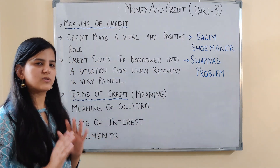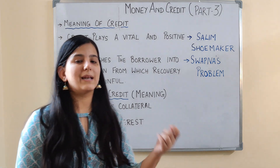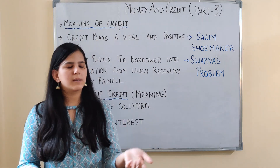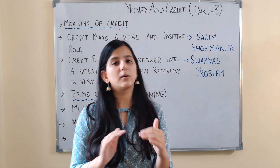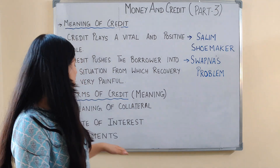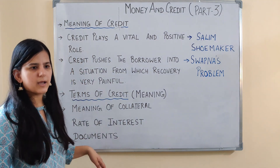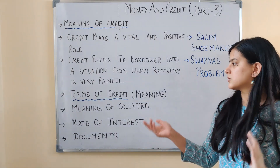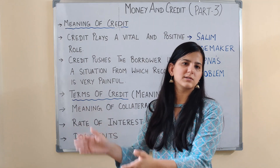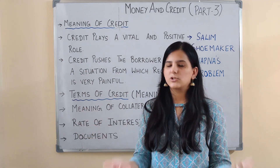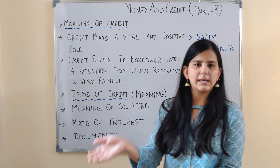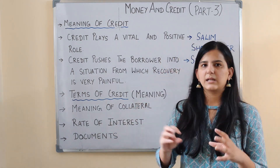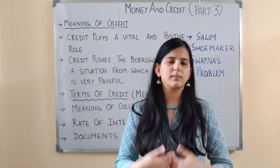The second term is the rate of interest. When you take a loan, the rate of interest is specified in the agreement — it doesn't fluctuate arbitrarily. Third are documents — for example, if you are taking a housing loan or an education loan, certain documents must be provided. So terms of credit are the conditions — including collateral, rate of interest, and required documents — that form the basis of the credit agreement.